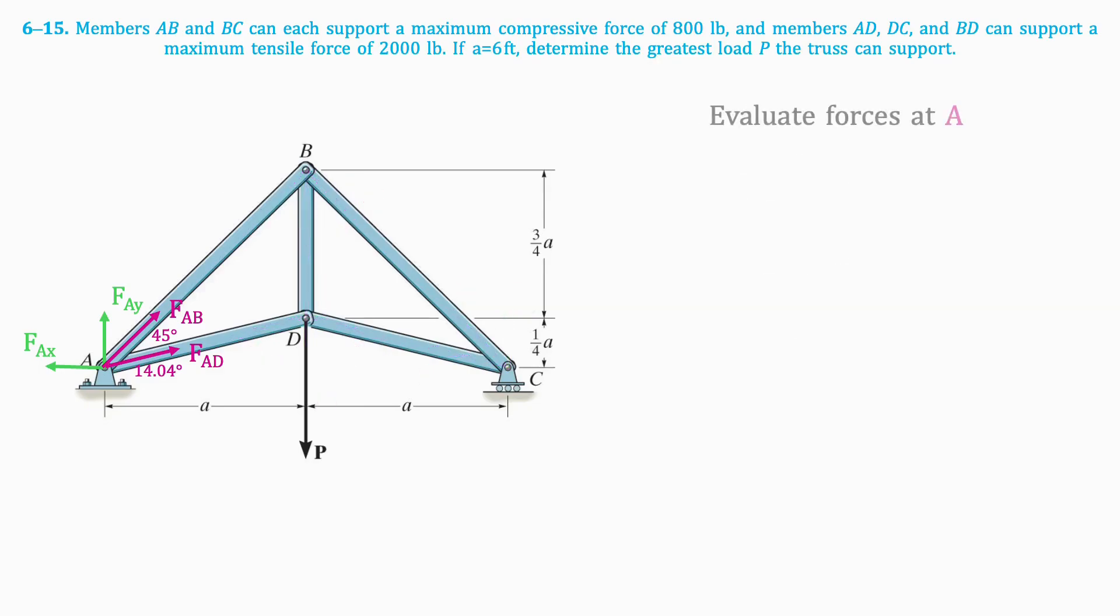Now, we'll evaluate the forces at joint A. The given information tells us that the maximum compression force that FAB can support is 800 pounds. So we'll assume FAB to be 800 pounds. Because it's a compressive force, we must flip the direction of FAB in our free body diagram.